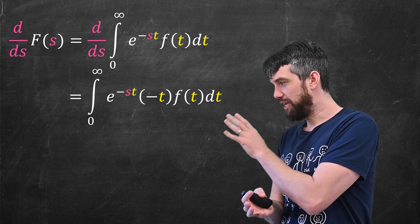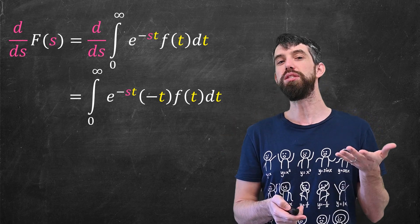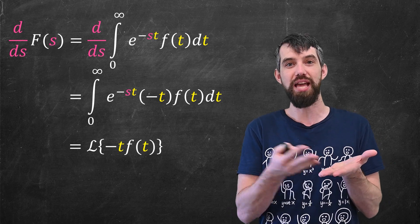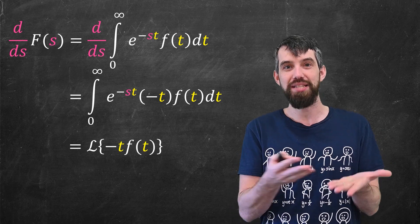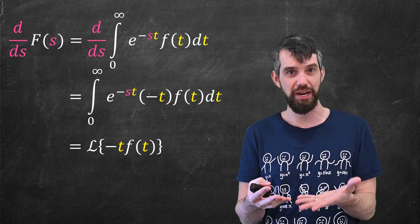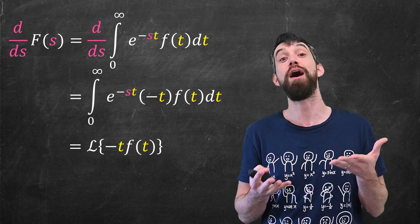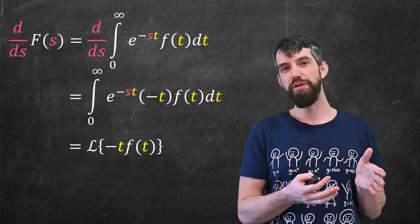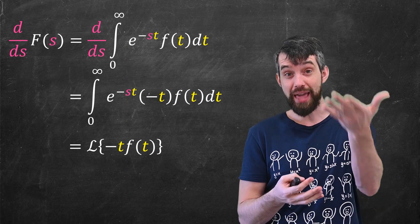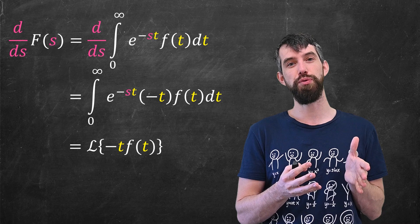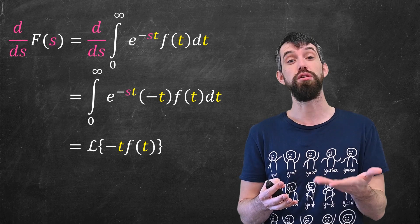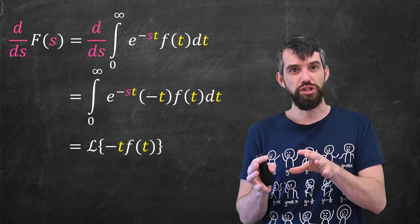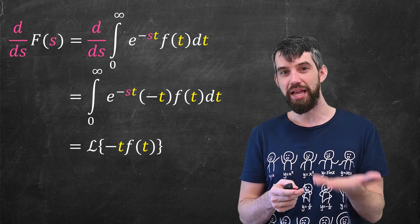Looking at the integral that results, it looks like the Laplace transform of the function minus t·f(t) — it takes that minus t·f(t), multiplies by the negative exponential, and integrates. That was the definition of the Laplace transform. So the derivative of the Laplace transform, the derivative of capital F, is not related to the derivative of the original function lowercase f. Instead, it's the original function multiplied by negative t.